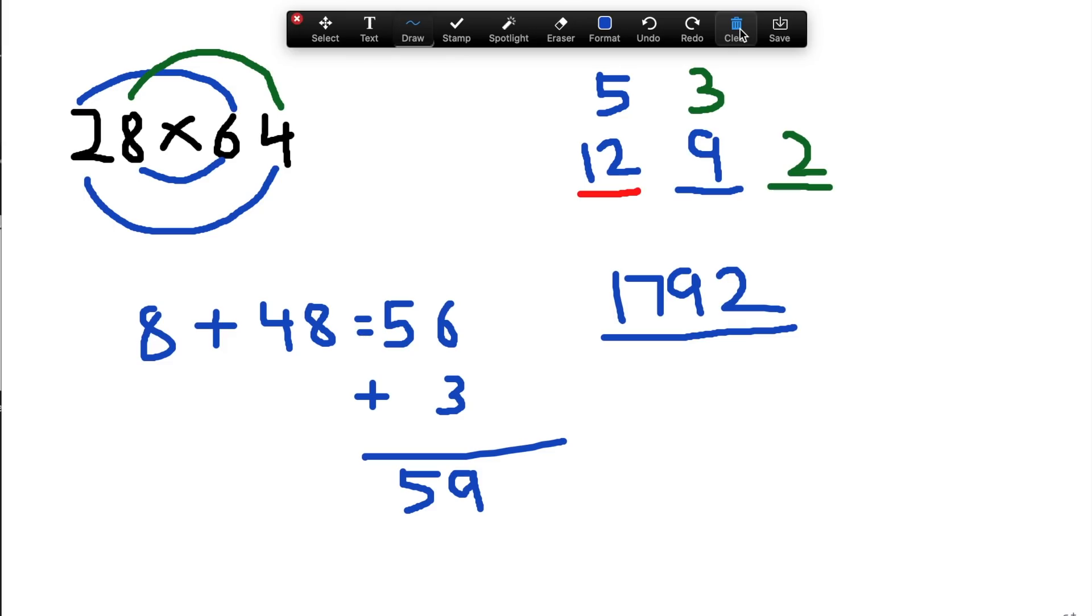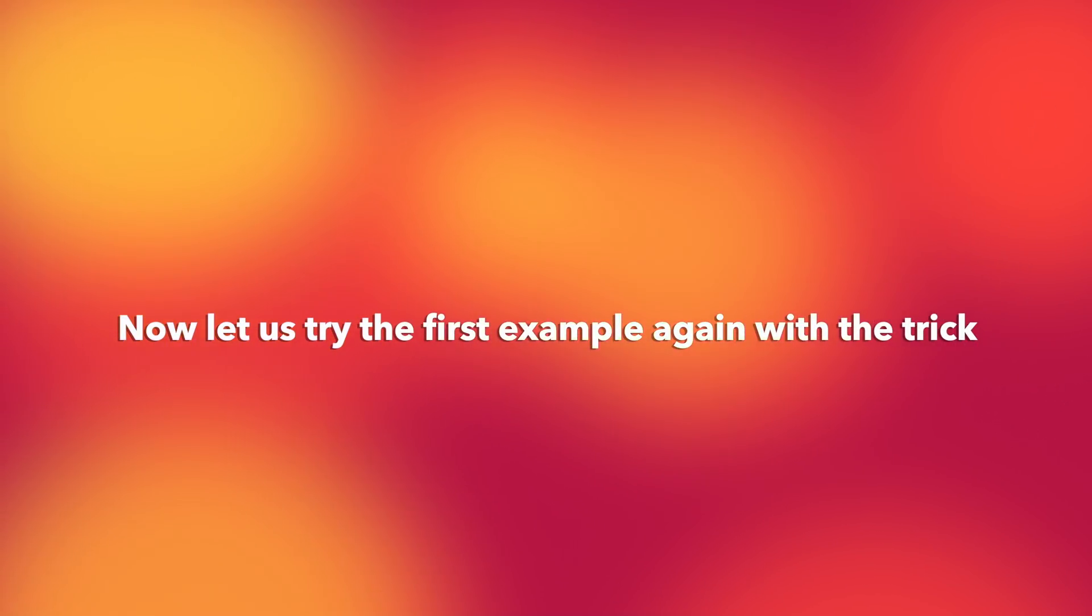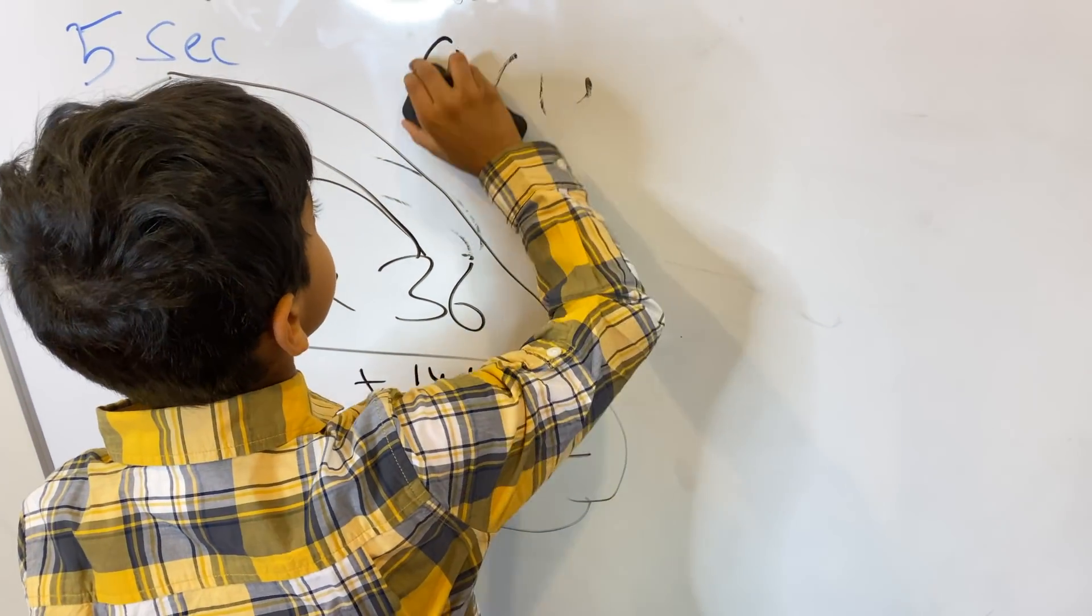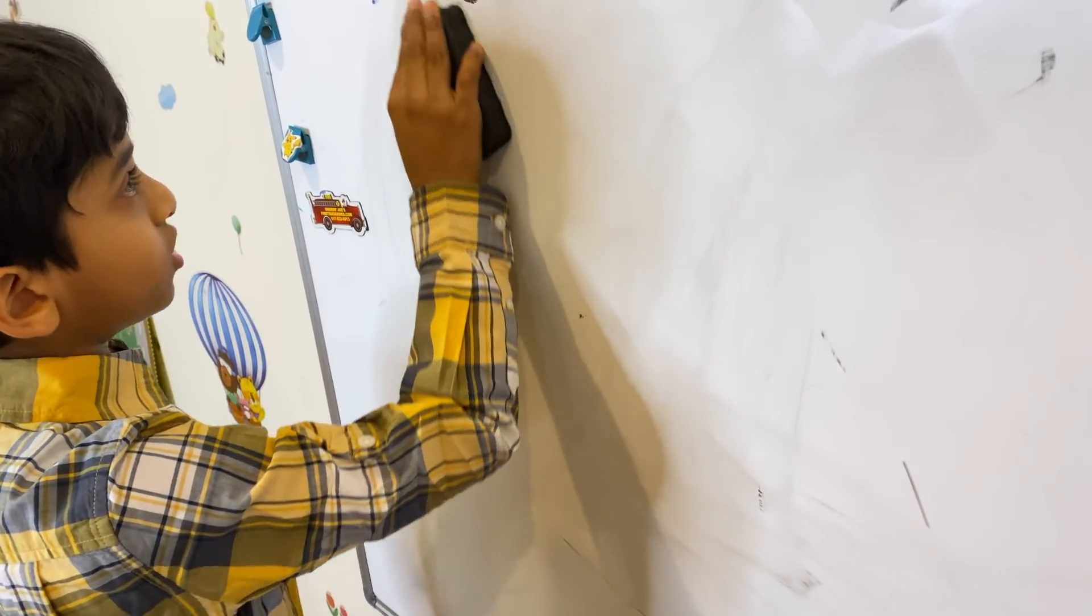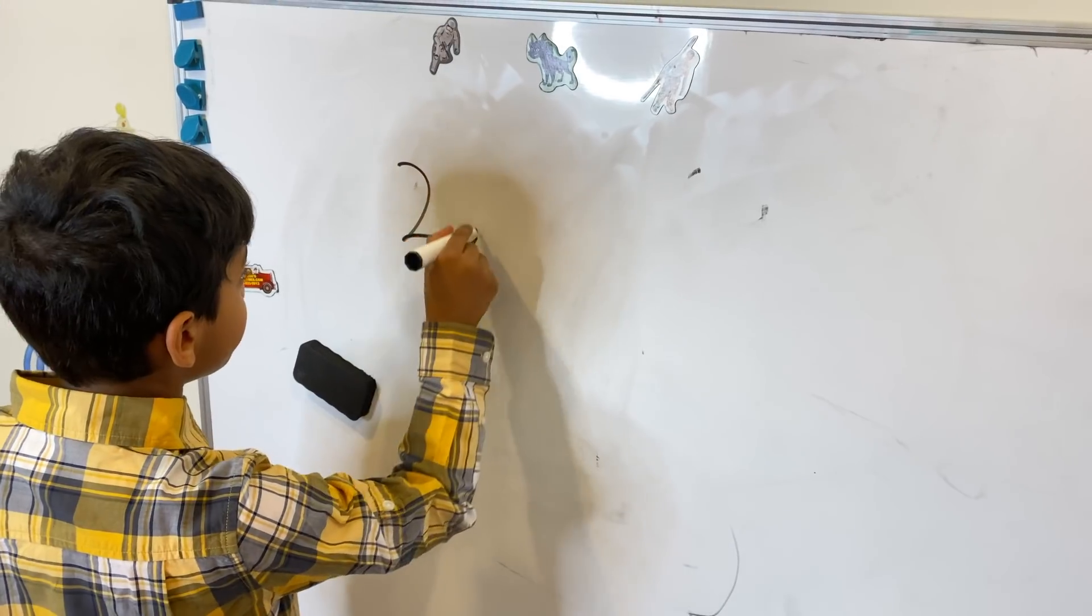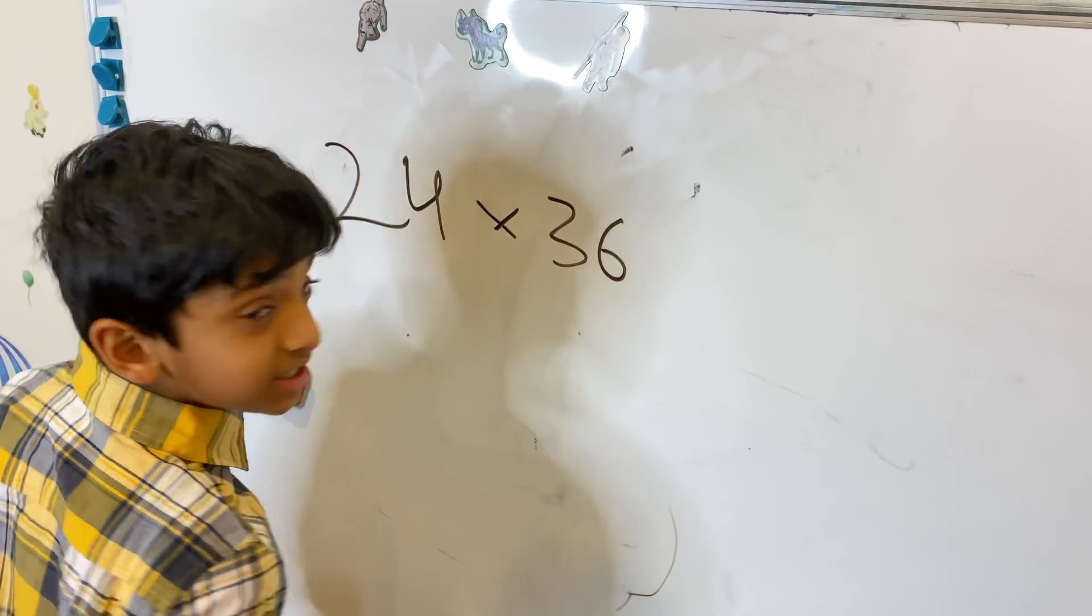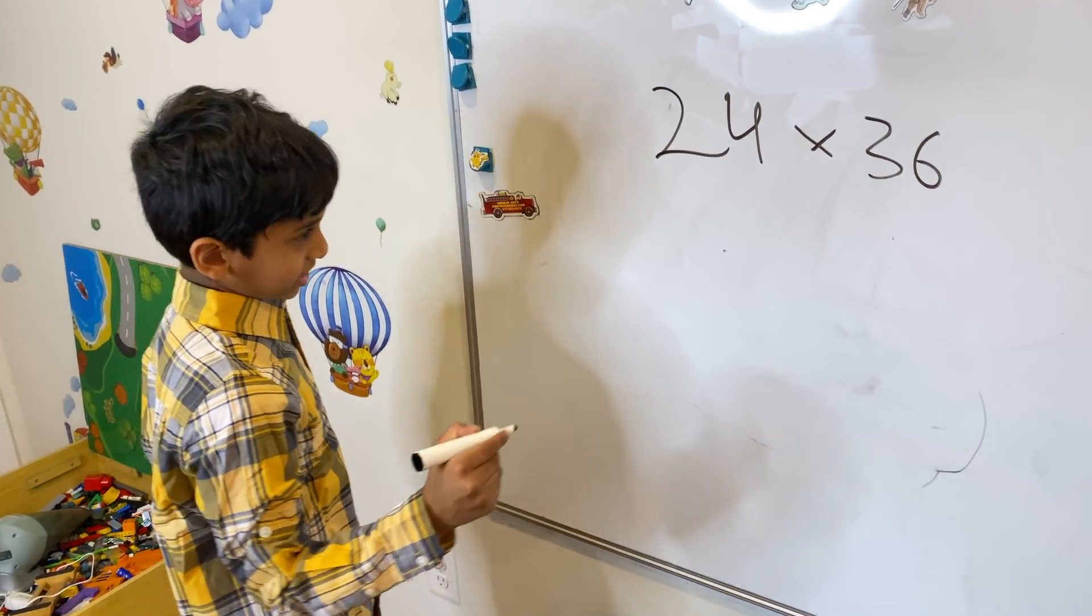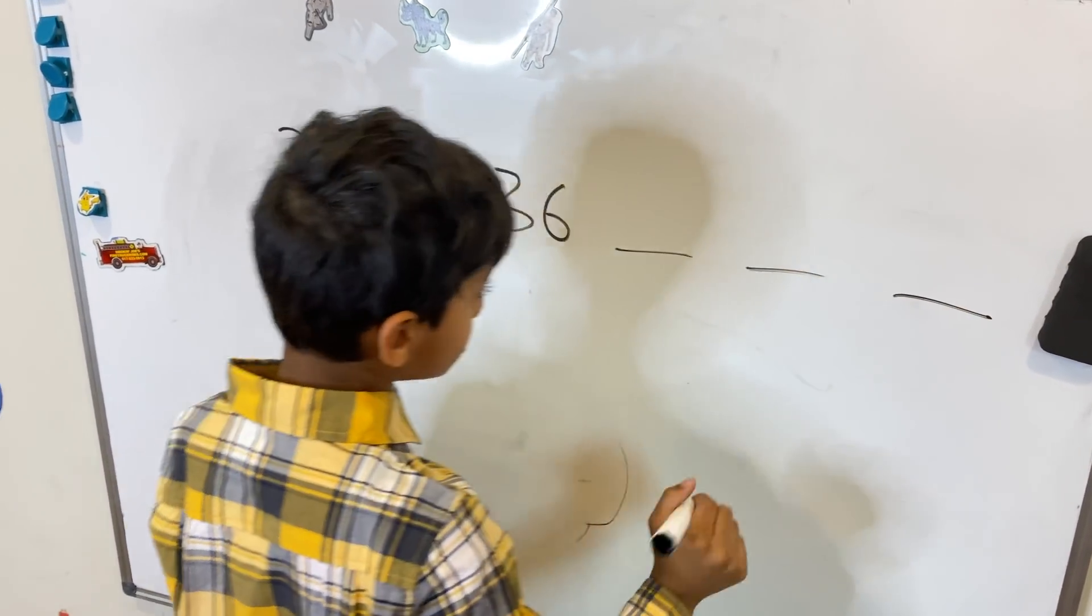I hope you got this very simple trick. Isn't it so much fun? Now let me show you how the trick works. Let's see how we can do it really fast. 24 times 36, right? So we need to do 3 dashes.